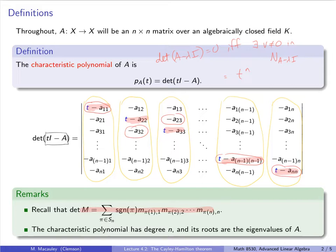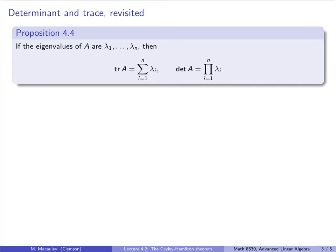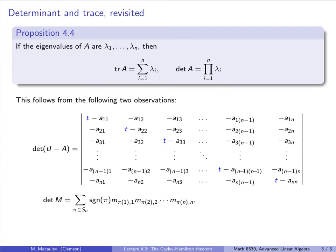Our first result is a characterization of two familiar quantities, the trace and the determinant, in terms of the eigenvalues. Namely, the trace is just the sum and the determinant is the product of the eigenvalues. It is not overly technical to verify these two identities, but it is a little bit notationally messy. I've put the determinant of TI minus A right here, and I really want to emphasize that if you have not already, please go back and watch my lecture on determinants of matrices.